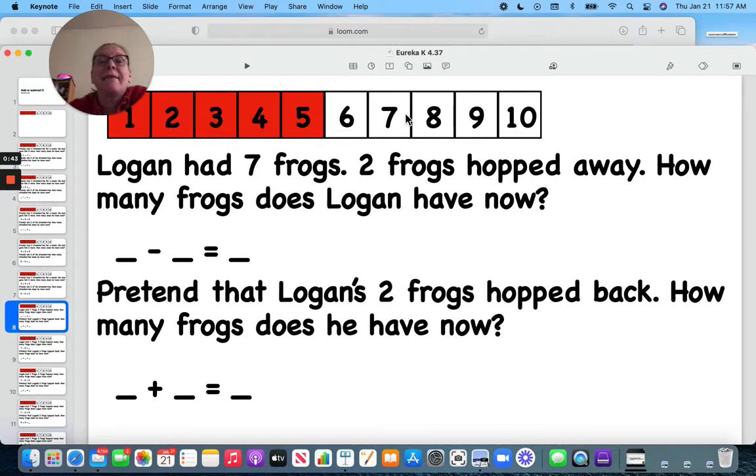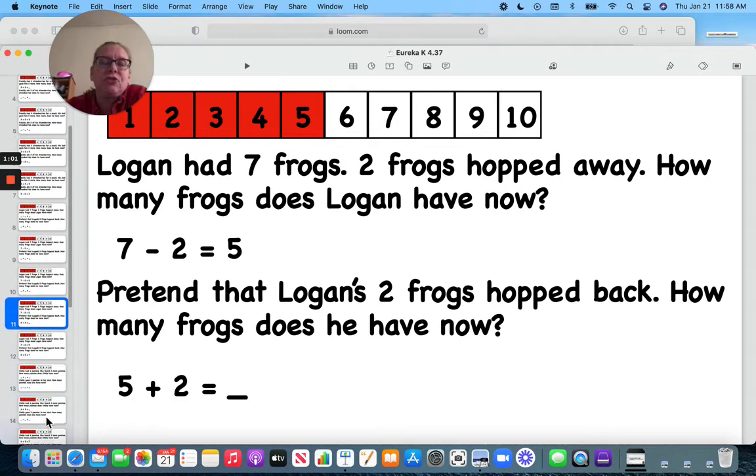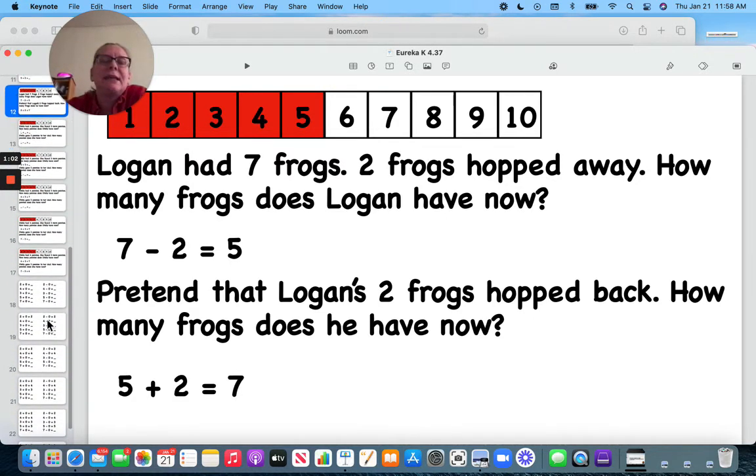Logan has seven frogs. Two hopped away. How many does he have now? One hop, two hop. Seven minus two was five. Pretend that Logan's two frogs hopped back. One, two. So, five plus two is seven.